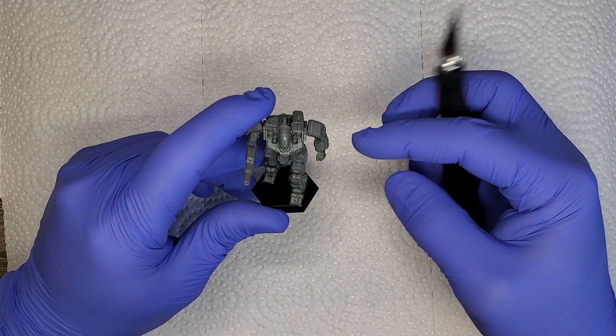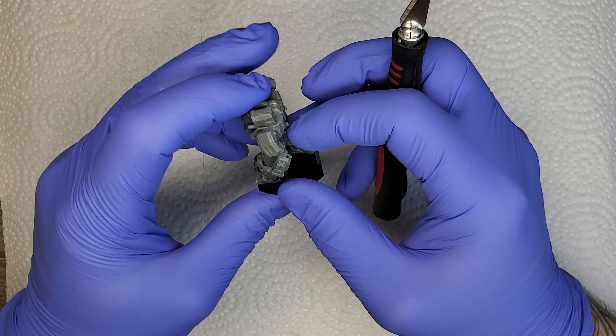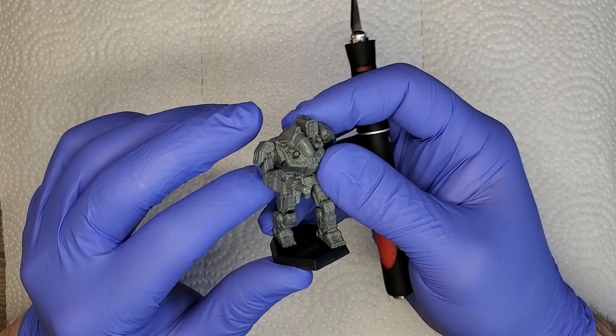So I thought I would start off with, we're gonna take this guy off its base, really simple, and then we're gonna clean up some of the mold lines on it as well, because there are quite a few I can spot here on this guy. Kind of the top, a lot of the panel edges and stuff like that.